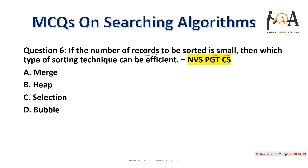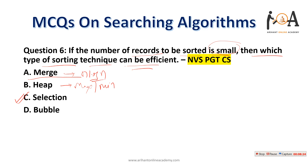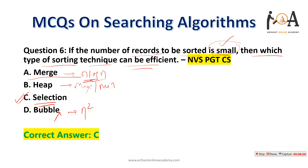Question six: if the number of records to be sorted is small, which sorting technique is most efficient? Selection sort is preferred when the number of elements is very small. Merge sort has O(n log n) complexity and is preferred for large datasets. Heap sort is used when finding the max or min element. Bubble sort has O(n²) complexity. For small record counts, option C — selection sort — is the most correct answer. This was asked in Haryana PGT CS.